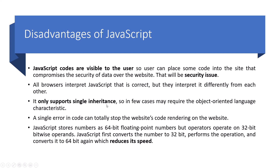JavaScript only supports single inheritance, so in some cases it may require object-oriented language characteristics beyond what it offers. A single error in code can totally stop the website's rendering. Also, JavaScript stores numbers as 64-bit floating-point numbers, but operators operate on 32-bit operands — so JavaScript first converts the number to 32-bit, performs the operation, then converts it back to 64-bit, which reduces its speed.